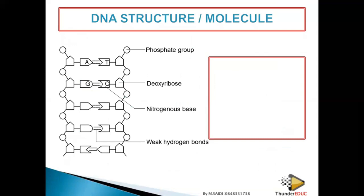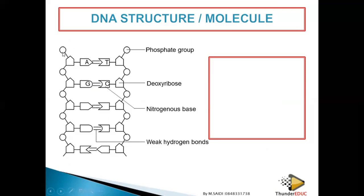This is the structure of the DNA molecule. DNA is a double-stranded molecule. Each unit shown is a nucleotide, made up of a phosphate group, sugar, and nitrogenous base. The nucleotides are joined together by sugar-phosphate bonds to form a strand. You have four bases — adenine, thymine, guanine, and cytosine — adenine pairs with thymine and guanine with cytosine. The two strands are linked by weak hydrogen bonds.